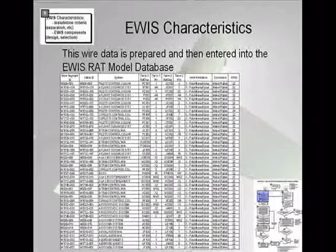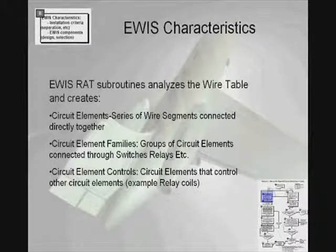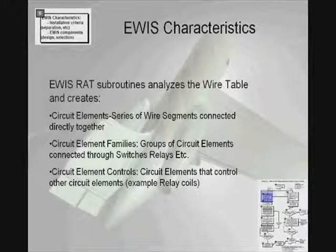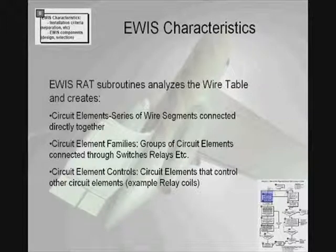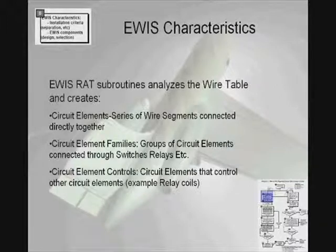In order to understand the flow of power and fault information through the aircraft and wiring systems, Electromex develops special terminology to handle this. The EWIS RAT subroutines analyze the wire table and create circuit elements, which are a series of wire segments connected together, such as through connectors. Circuit element families, which are groups of circuit elements, are connected through switches or relays.